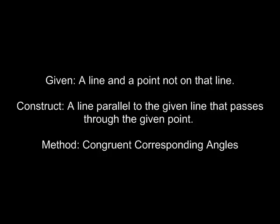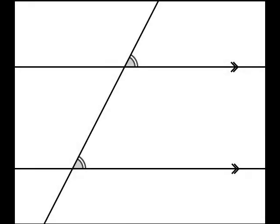Given a line and a point not on that line, our goal is to construct a line parallel to the original line through the given point. And the method is going to be using corresponding angles.